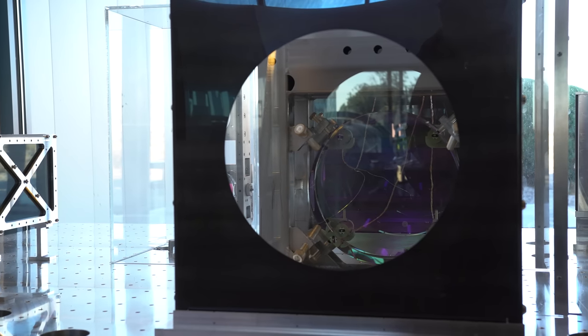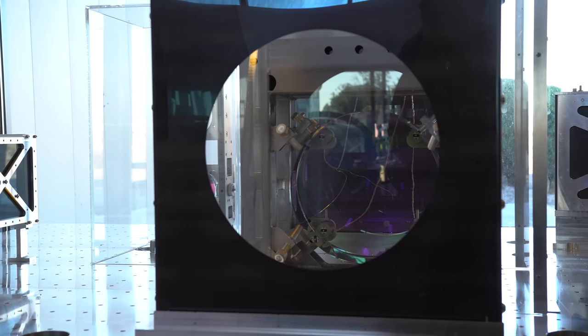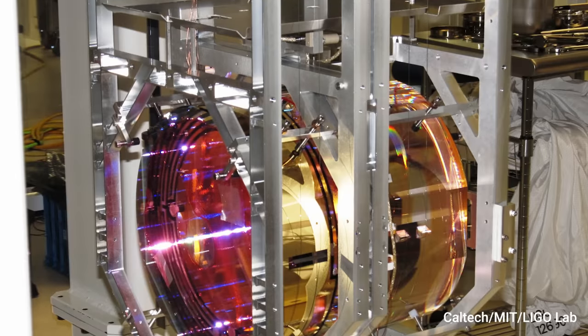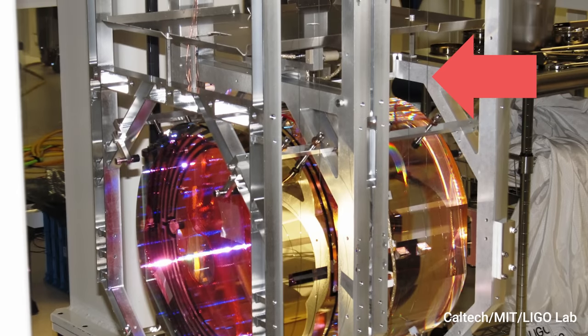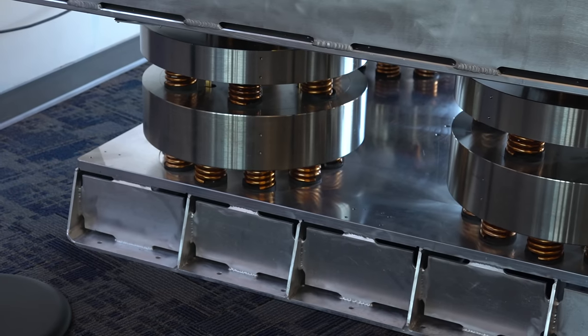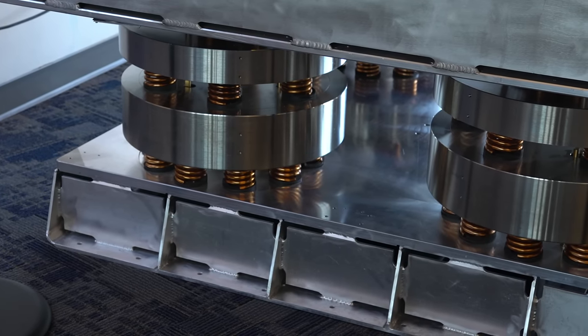This is one of the mirrors from iLIGO. To reduce the high frequency vibrations, the mirror is hung like a pendulum by this steel wire, and the lower frequency vibrations are decreased by the springs on the lower base.